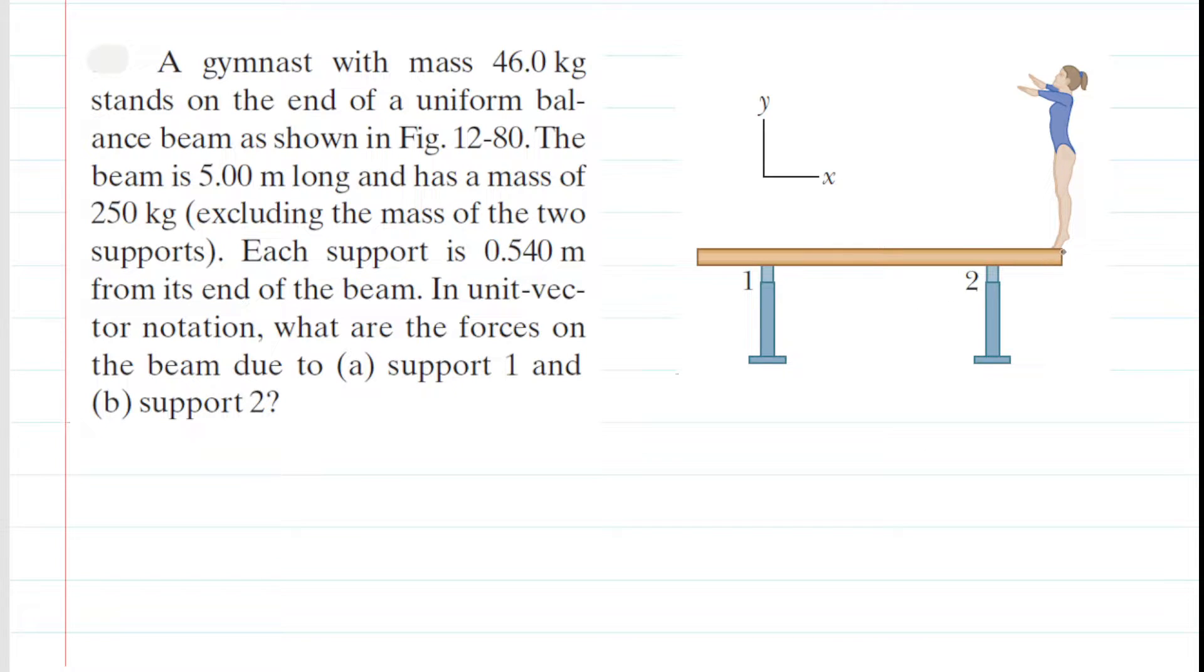Perhaps the most obvious force is the weight force of the gymnast pressing down on the beam. So we're going to draw a gravitational or weight force pressing down on the beam and we're going to symbolize that by using lowercase m times g. Now the beam itself has weight. The mass is given and therefore it will also have a gravitational force. We're going to call that gravitational force capital Mg.